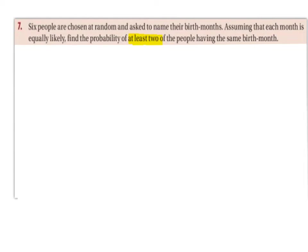Question 7. Six people are chosen at random and asked to name their birth months. Assuming that each month is equally likely, find the probability of at least two of the people having the same birth month.